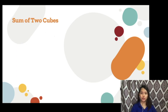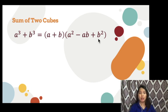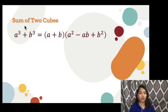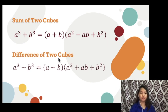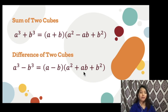Sum of 2 cubes: a cubed plus b cubed equals the quantity a plus b times the quantity a squared minus ab plus b squared. Since this is sum of 2 cubes, the operation is addition, and both the first and last terms must be perfect cubes. Difference of 2 cubes: the operation is subtraction. a cubed minus b cubed equals the quantity a minus b times the quantity a squared plus ab plus b squared.